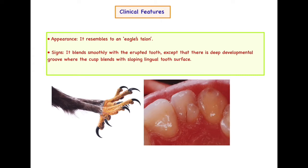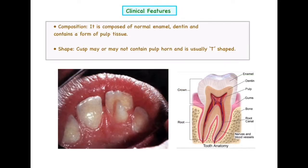Because four lobes may be involved in the development of Talon's Cusp, there is a deep developmental groove present in this anomaly. Only at this particular point does the cusp blend smoothly with the sloping lingual surface. At other areas it appears to be smoothly blended with the lingual surface, and it extends till the incisal edge of the tooth in most cases.